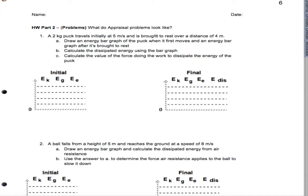All right, let's take a look at the homework problems. So we've got a 2-kilogram puck traveling initially at 5 meters per second, and it's brought to rest over a distance of 4 meters. So let's draw an energy bar graph of the puck when it first moves and then when it's brought to rest.